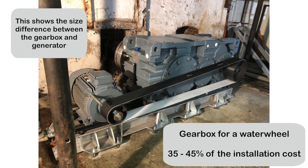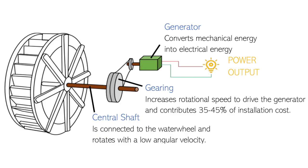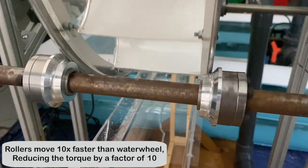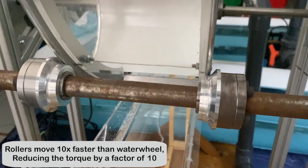For a conventional power take-off setup, an axial gearbox accounts for around 40% of the installation costs. Our solution uses friction rollers which increases the power take-off speed by a factor of 10, reducing gearbox requirements.